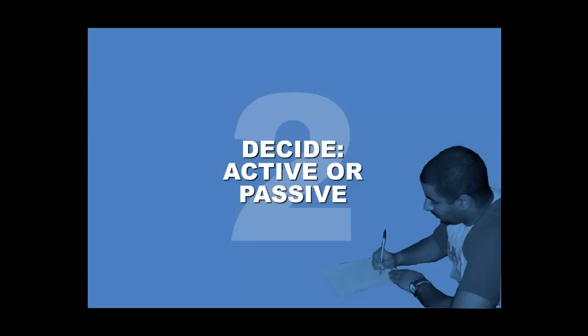Our next top tip is decide whether to use the active or passive form of the verb. Ronald Reagan famously said mistakes were made instead of I made mistakes. He deliberately used the passive voice instead of the active voice. Why did he do that? What's the difference?